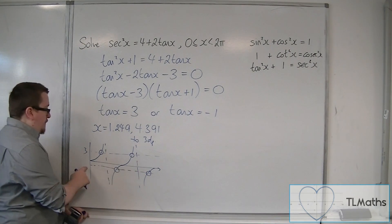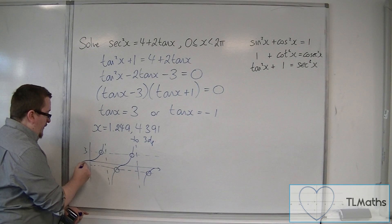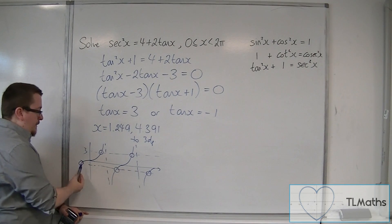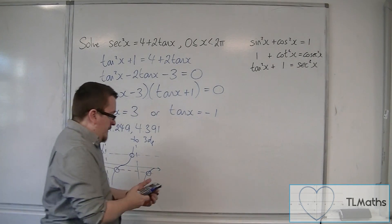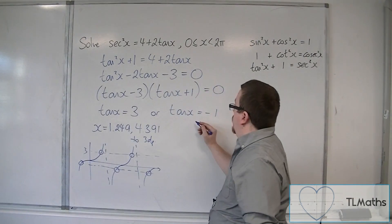That gives us minus pi over 4, which is this solution here, to the left of the y-axis. We don't want that one. So we're going to add pi onto that. And we get 3 quarters pi, or 3 pi over 4.